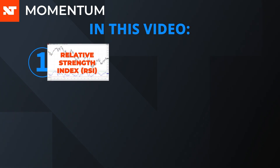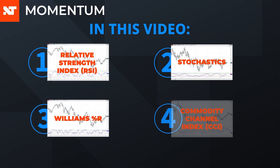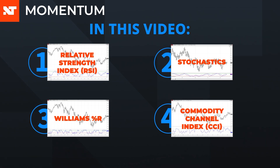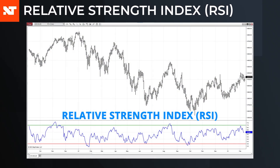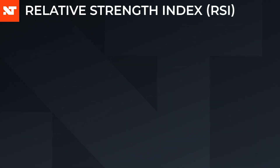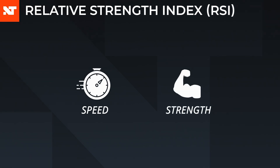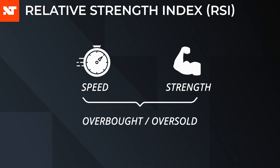The indicators we'll cover are the Relative Strength Index (RSI), Stochastics, Williams %R, and the Commodity Channel Index. The most common momentum indicator used by traders is the Relative Strength Index, or RSI. This indicator compares the strength of moves on up bars versus down bars. The measure of the speed and strength of price action results in the trader's ability to determine if a market is overbought or oversold.